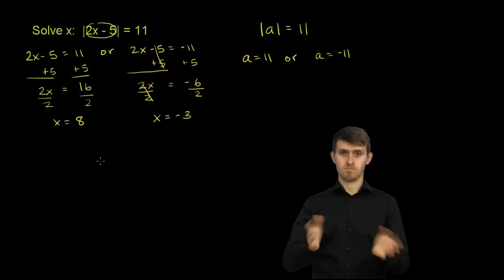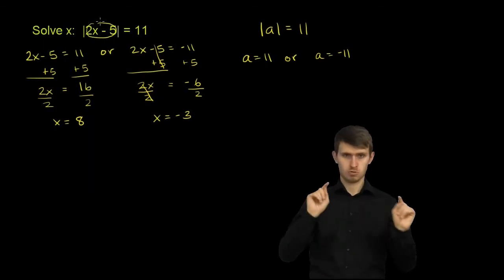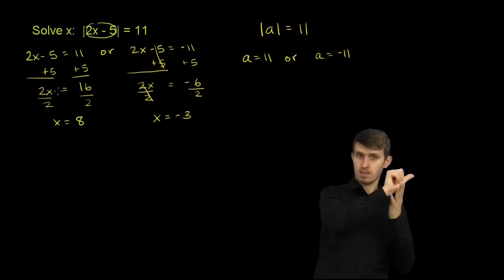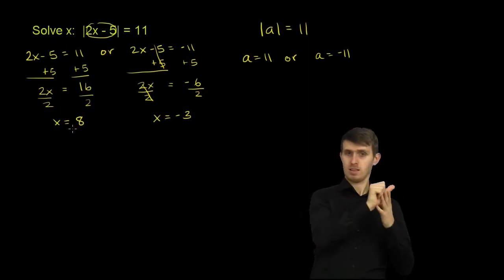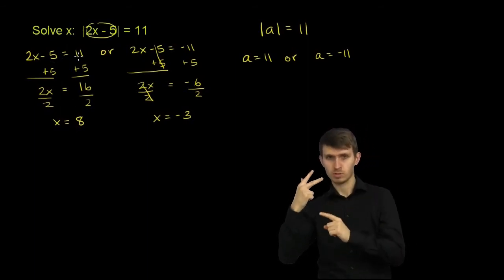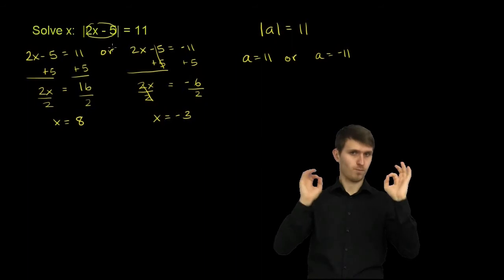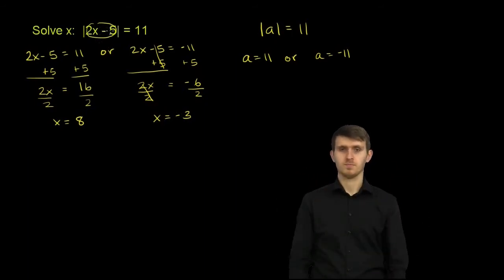So we've gotten two solutions, depending on whether the expression inside is equal to 11 or negative 11. We got x could be equal to 8, in which case 2x minus 5 would be 11. Or x is equal to negative 3, in which case 2x minus 5 is equal to negative 11.